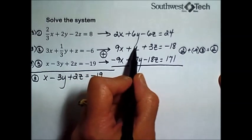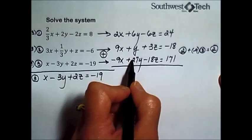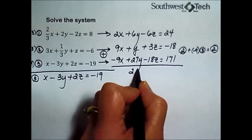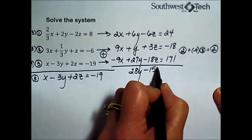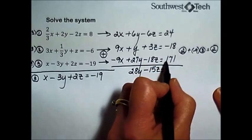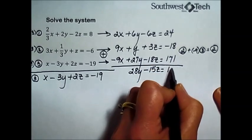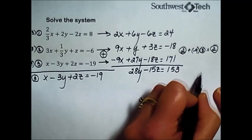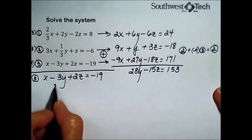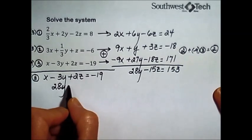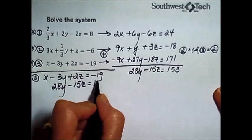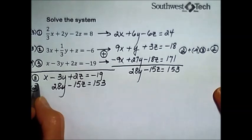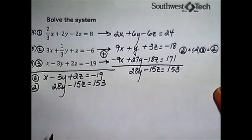The x's cancel out. 1y and 27y makes 28y. 3z and negative 18z gives us negative 15z. Negative 18 plus 171 is 153. I'm going to slide that in here in our slot for the altered equation. So here's equation number two, the new equation number two.